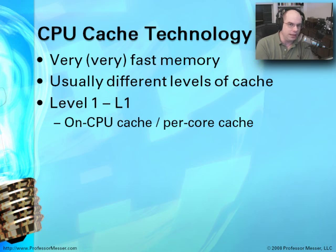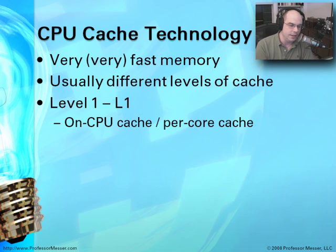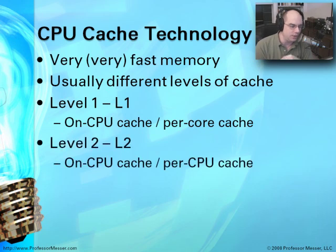You'll hear the term level one cache, often referred to as L1 cache. It's often on the processor itself. Although if you ever look at a processor it's just a square block, there are actually many, many different pieces in there. This level one cache memory is usually right there on the chip, and it's often on a per-core basis as well. We'll talk about multiple cores in a CPU, but just keep in mind that if there is a processing unit, there is almost always an L1 cache associated with it.